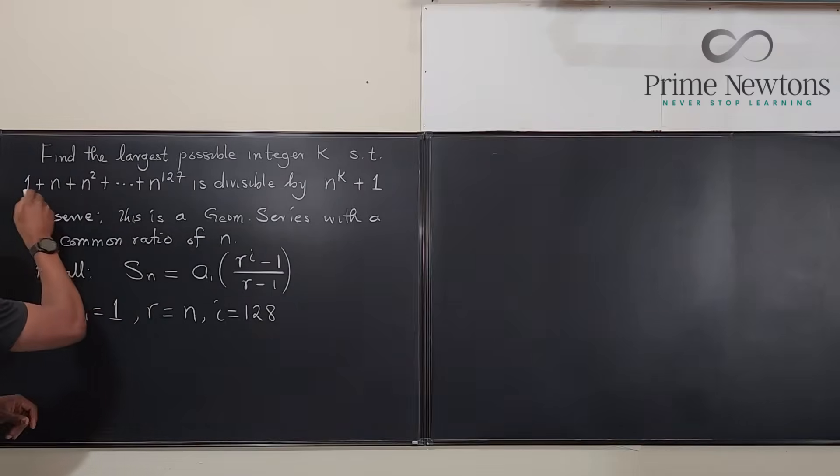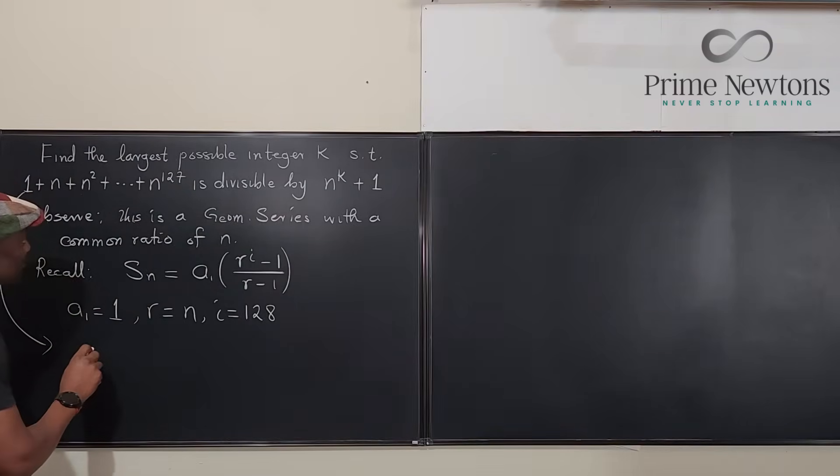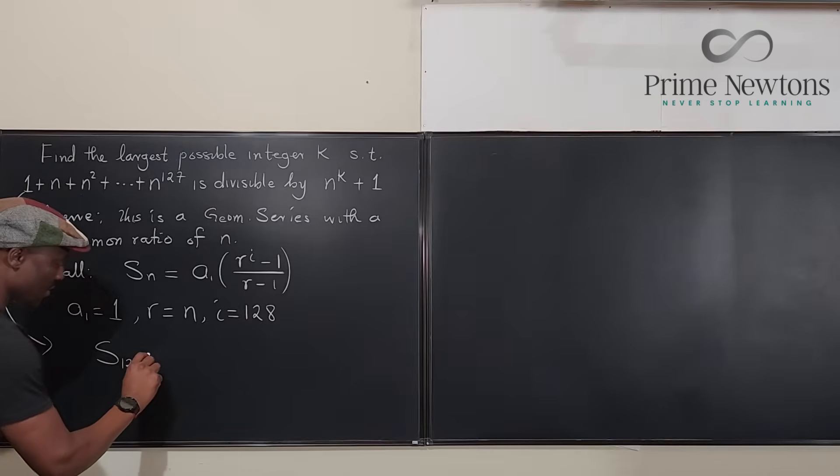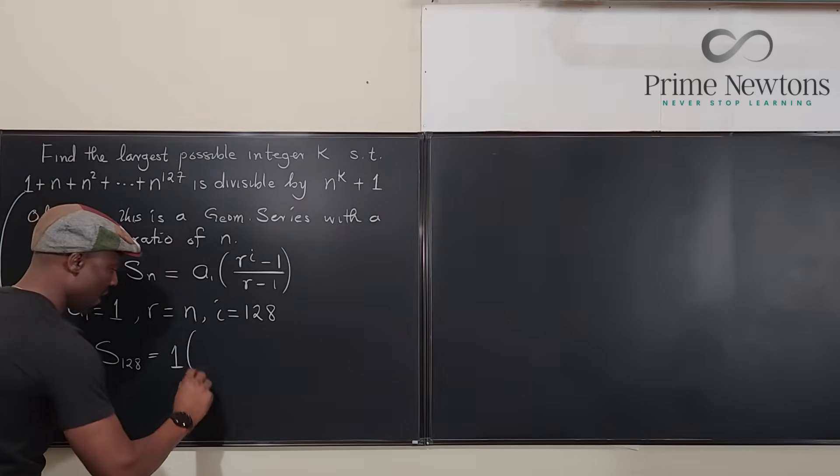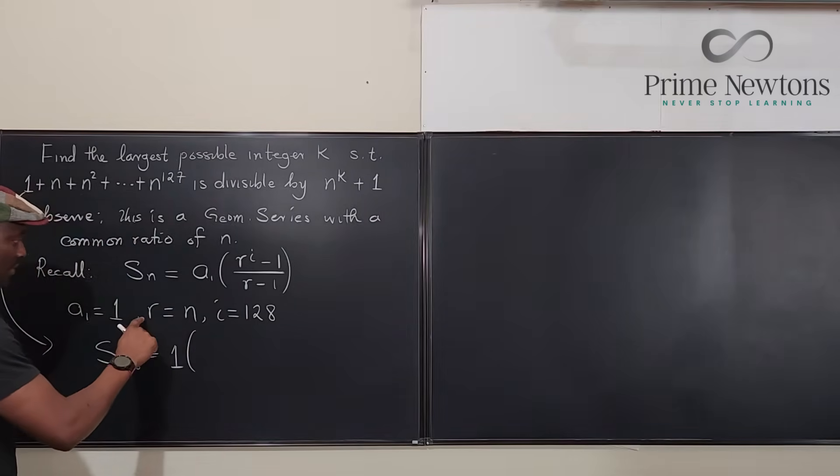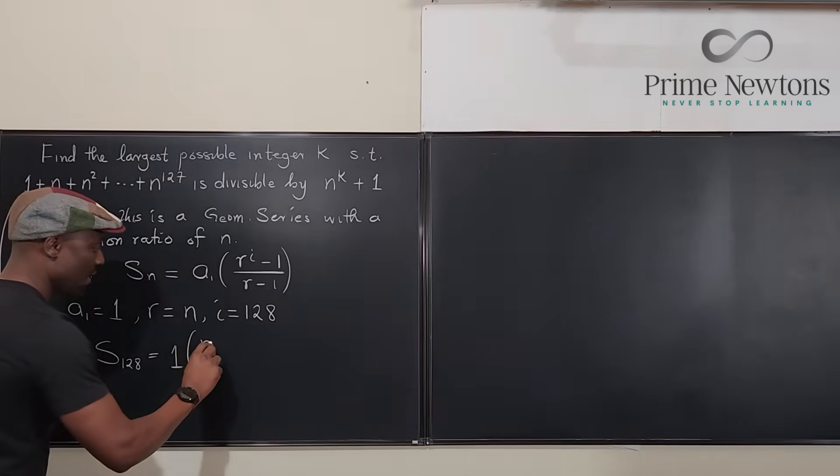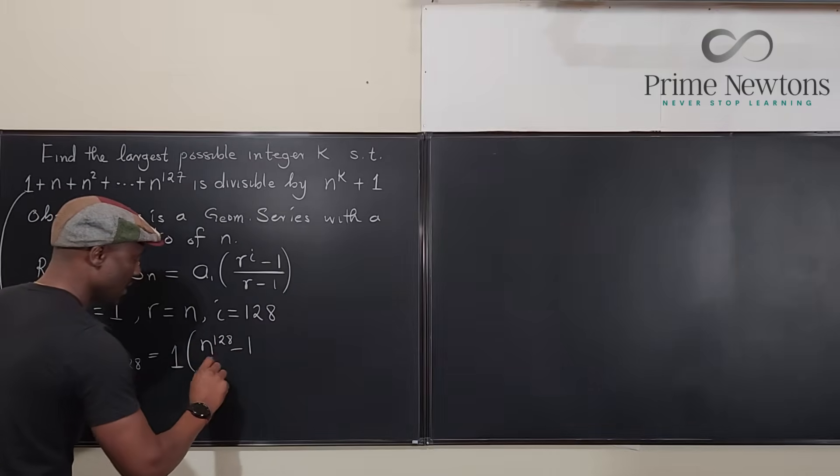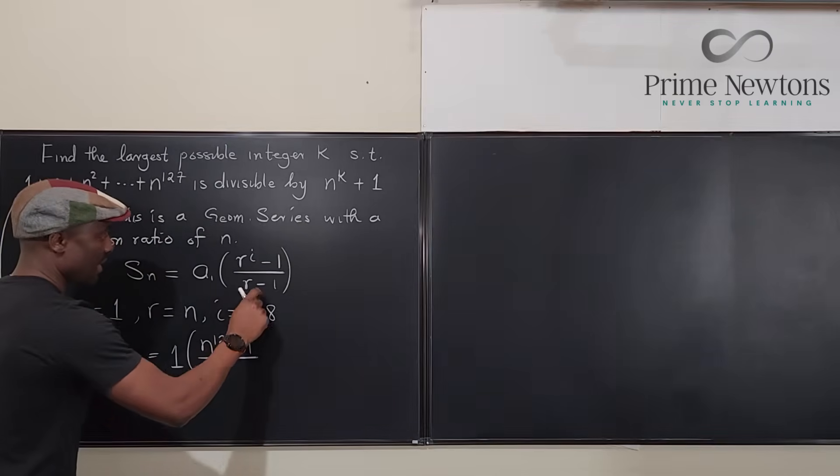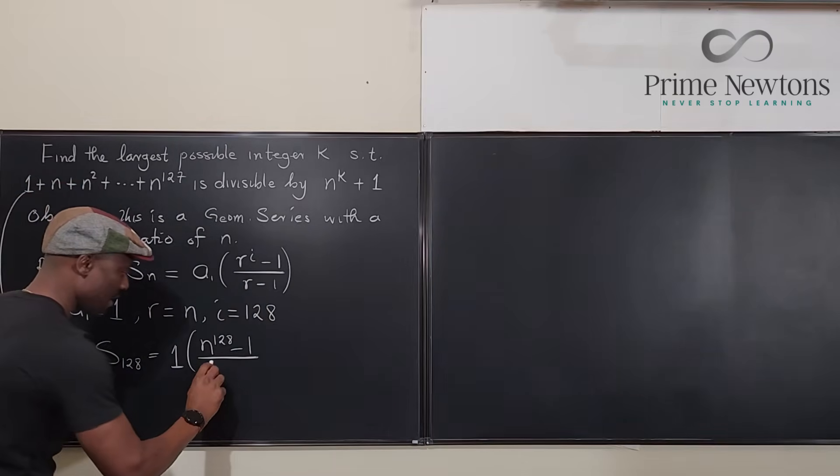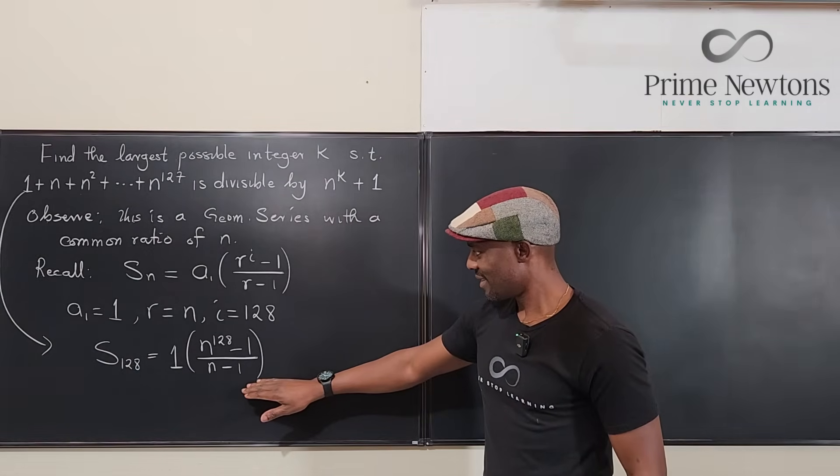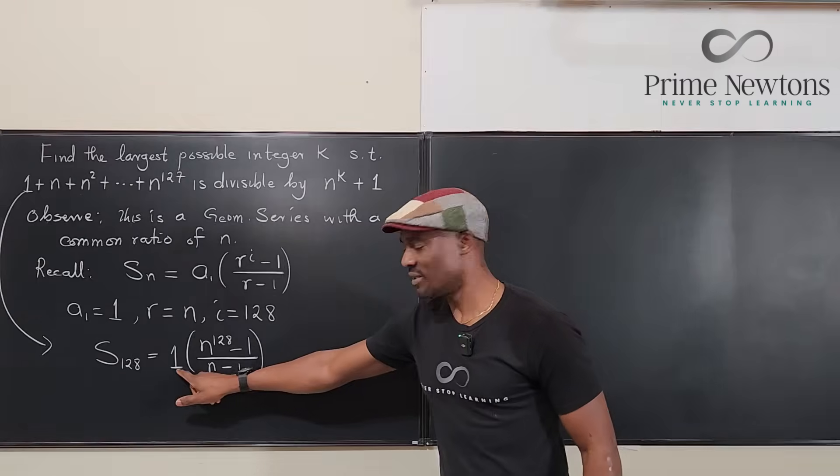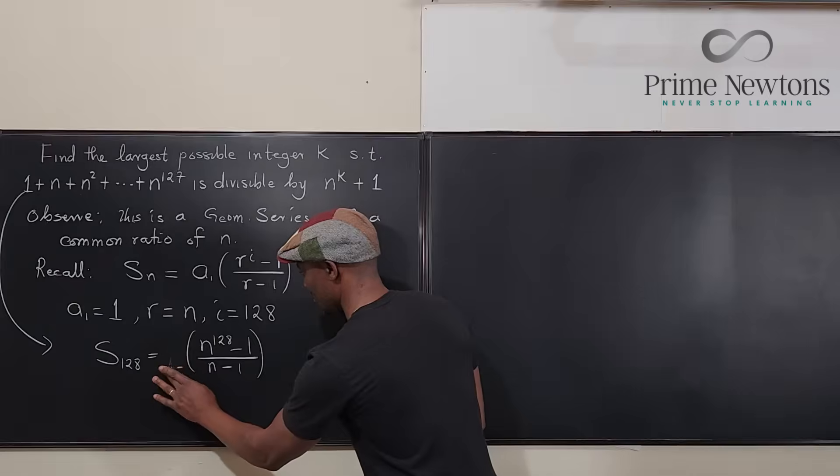So we can now write this. The sum of the 128 terms will be equal to the first term, which is 1, multiplied by r, the common ratio, n, to the i, 128 minus 1, divided by the common ratio, which is still n minus 1. You notice that this 1 is not effective because 1 times anything is that.